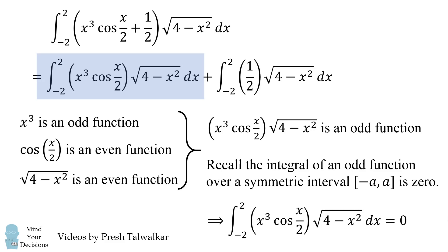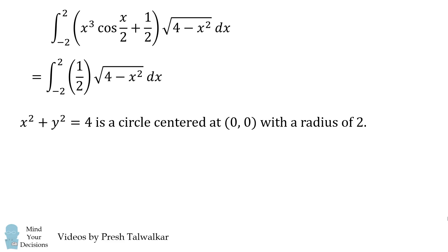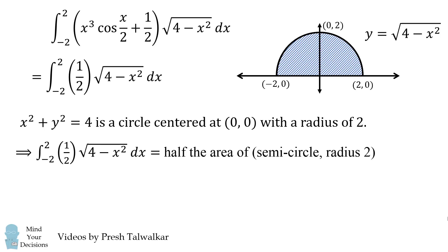So we've already simplified the problem tremendously. Now, how do we solve the remaining integral? Remember that x squared plus y squared equals 4 is the equation for a circle centered at the origin with a radius of 2. So we can graph the square root of 4 minus x squared as a semicircle with radius 2 in the positive y-axis. We want to calculate the area under it and take one half of that area. The integral will be half the area of a semicircle with radius 2. Pi r squared is the formula for the area of a circle, so we want one half of pi r squared, and then half of that — one half of one half pi r squared — and this simplifies to pi.